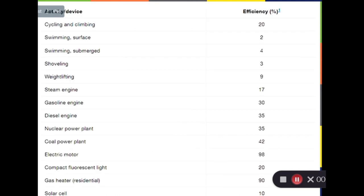In this table, you can tell the electric motor can transform electric energy into kinetic energy at an efficiency of 98%, while solar panels can only transform 10% of the received solar energy into electricity.